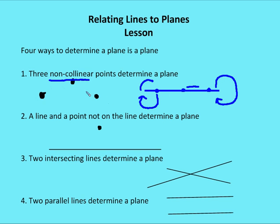The second way to determine a plane is if I have a line and a point not on that line. Third is if I have two intersecting lines. The last is if I have two parallel lines. Note that two skew lines do not determine a plane.